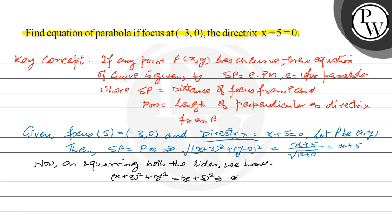This will give me x² + 6x + 9 + y² = x² + 10x + 25. x² will be cancelled out, we will be getting y² = 4x + 16.